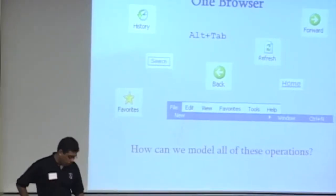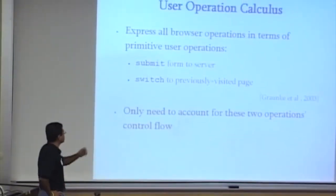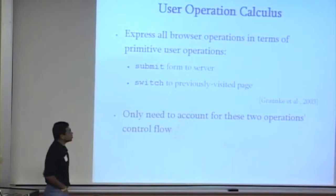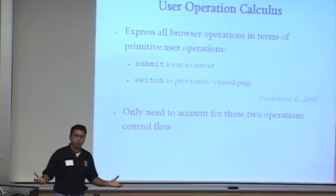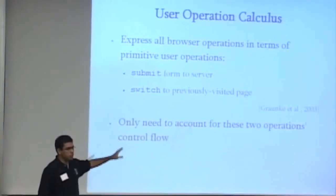But one of the things that we've done in the past few years, and this is work actually with Matthew, Matthias, and Ravi, is to find a calculus so we can reduce this big myriad of web interaction operations to two simple primitives.